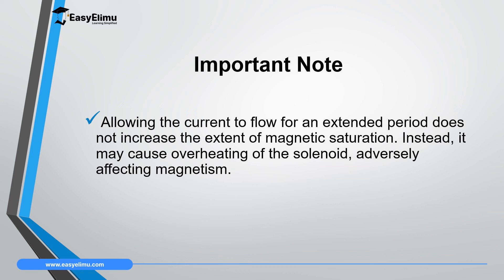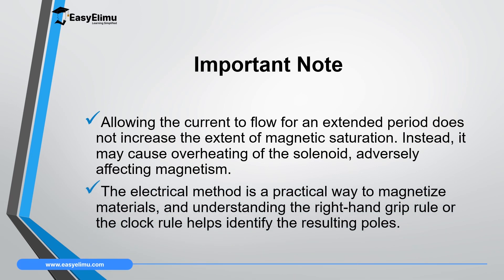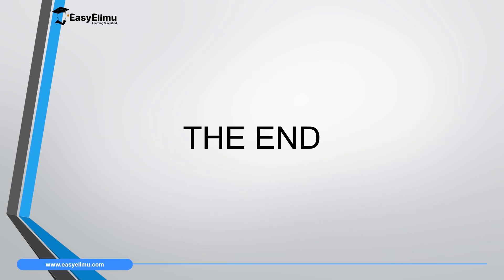It is important to note that allowing current to flow for a long time does not increase magnetic saturation. Once magnetic saturation is reached, excess current causes a heating effect on the solenoid, raising the temperature of the material and causing the particles to vibrate more vigorously, leading to disorientation of the dipoles and demagnetizing the material. Understanding the right-hand grip rule and the clock rule makes it easy to identify north and south poles when magnetizing using direct current. In the next lesson we will discuss the stroking method.